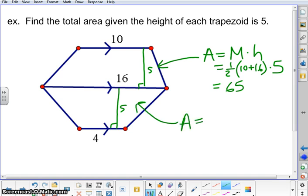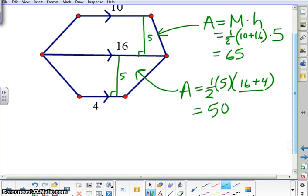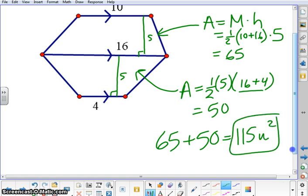And then for the bottom one, we know that we have 1 half and then 5 is our height. Base 1 is 16. Base 2 is 4. 20 divided by 2 is 10, so that has to be 50 units. So for a total of 65 plus 50 equals 115 units squared. Make sure you're labeling on all of them.